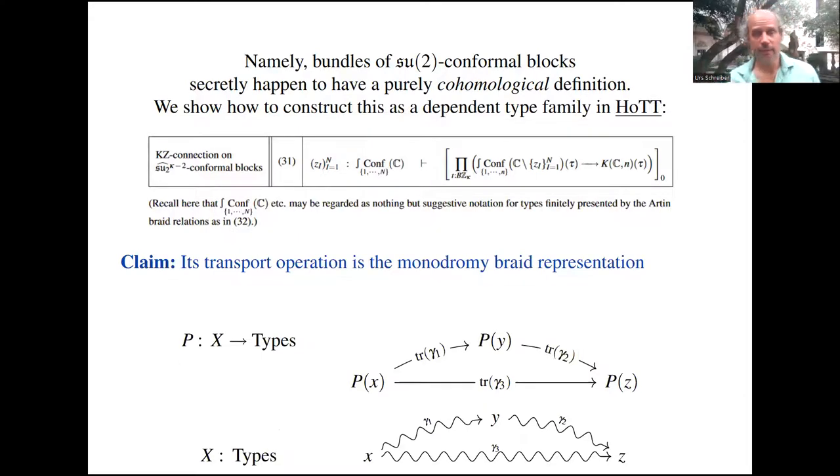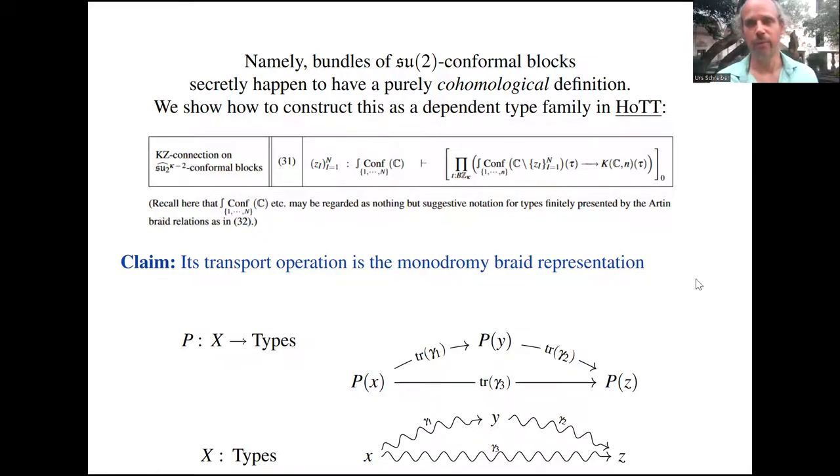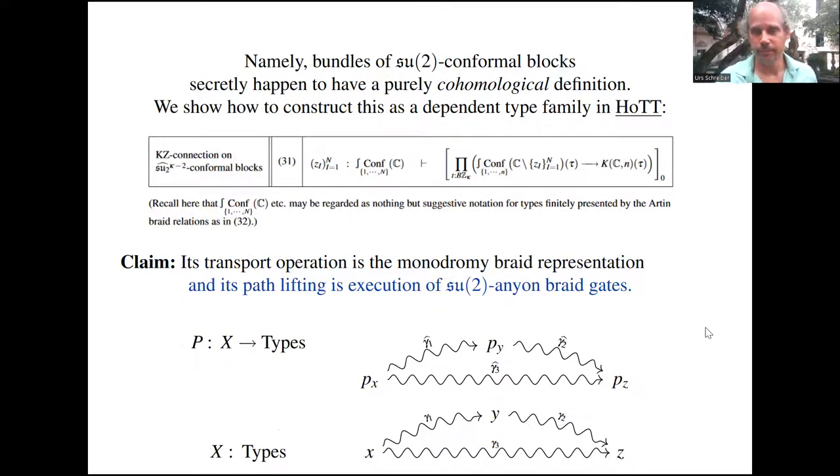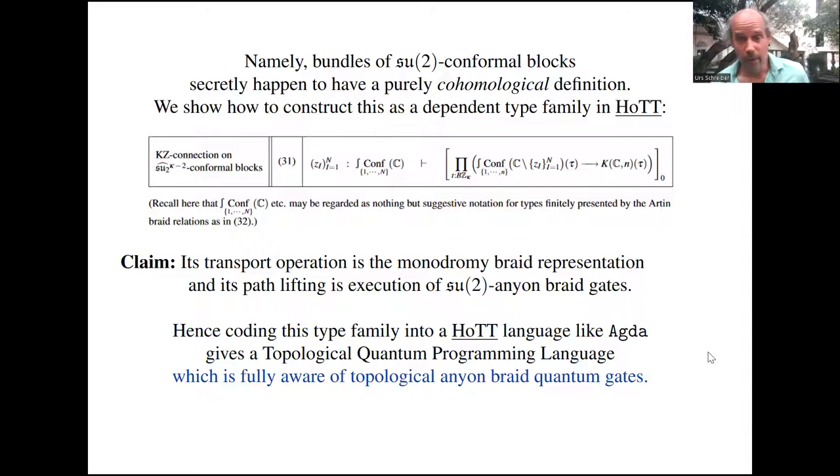If you ask how these Knizhnik-Zamolodchikov connections on bundles of conformal blocks are constructed in algebraic topology and then translated via this dictionary to homotopy type theory, you find this construction. It follows by the dictionary that path lifting, the transport in this dependent type family, reflects the monodromy braid representations for SU(2), and the path lifting is the SU(2) anyon braid gates. Coding this type family into any homotopy type theoretic language like Agda constitutes a topological quantum programming language fully aware of the fine detail of topological anyon braid quantum gates.